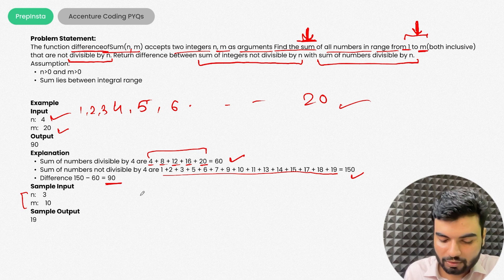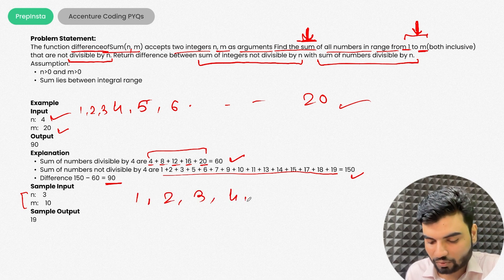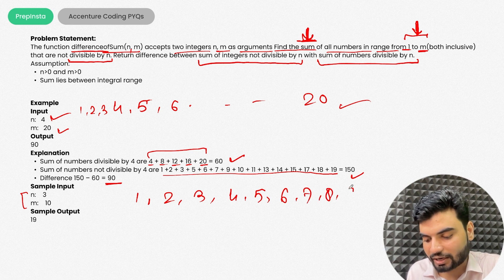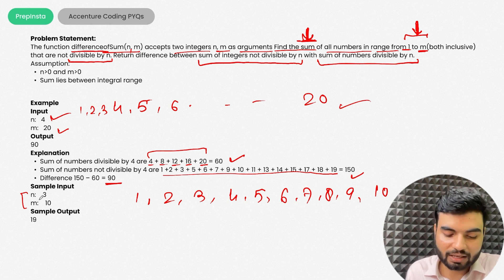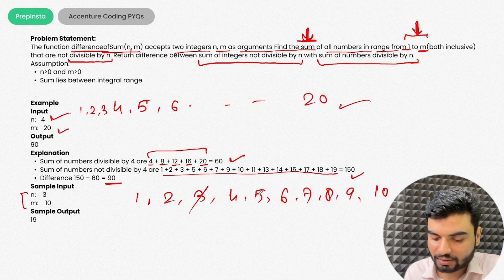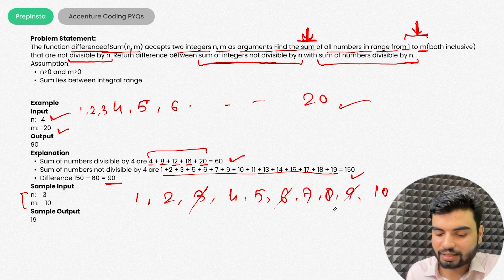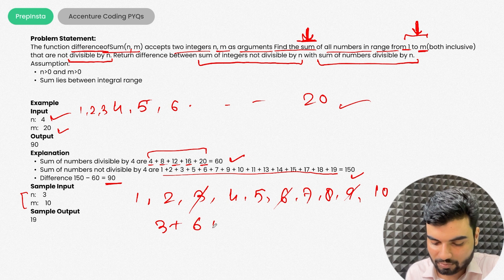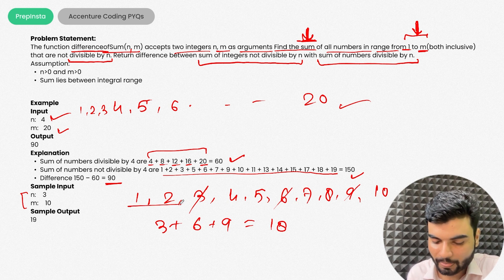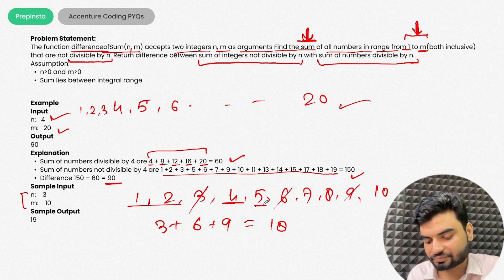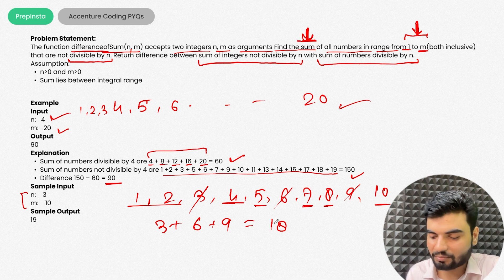For n=3 and m=10, the range is 1 through 10. Numbers divisible by 3 are 3, 6, 9 — their sum is 18. The remaining numbers sum to 37. So 37 minus 18 equals 19, and that's the output.